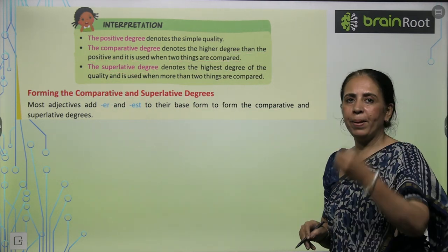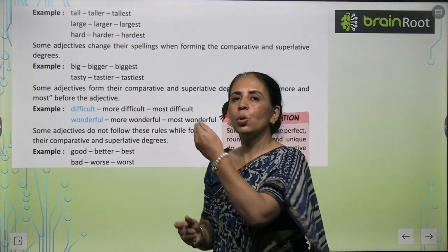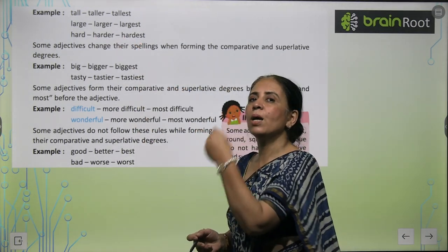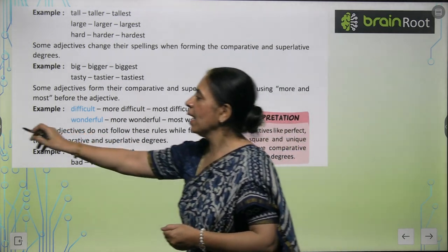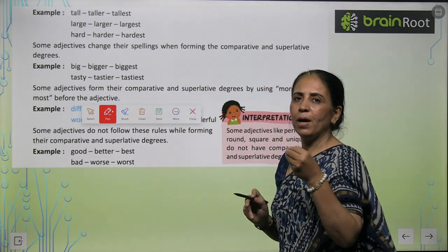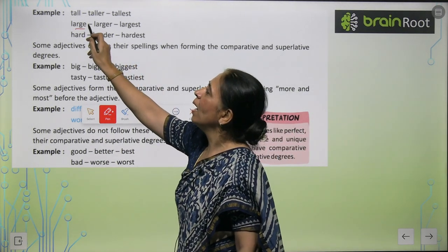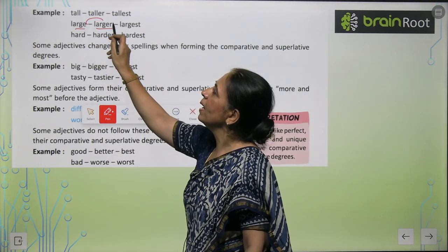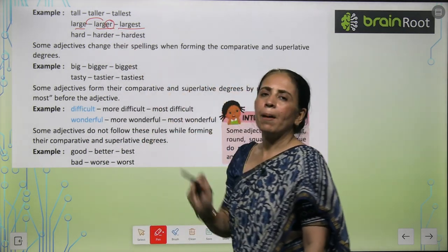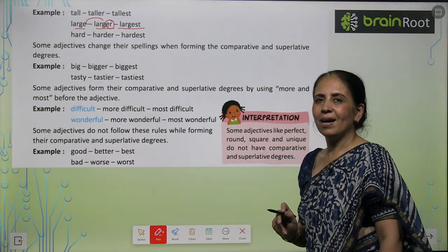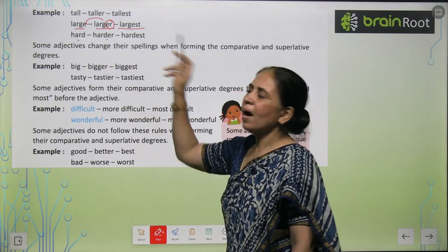Similarly, 'large' is the positive degree — its comparative is 'larger' (we add ER) and its superlative is 'largest.' Then we have 'hard,' 'harder,' 'hardest.' Sometimes the spelling changes: 'big' becomes 'bigger' and 'biggest,' where we double the G. So it is big → bigger → biggest.